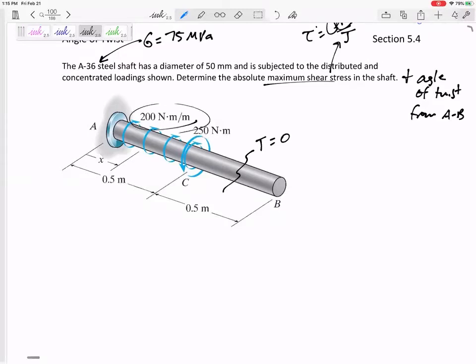I've got a concentrated 250 newton meter torque right there. Then I've got a distributed 200 newton meters per meter. If I had a whole meter's worth of it, it'd be 200 newton meters. I only have 0.5.